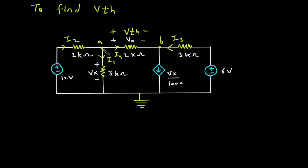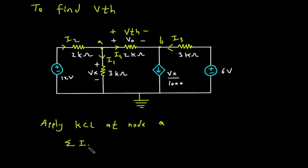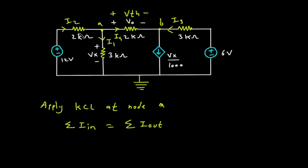Apply KCL at node A. According to KCL, that is Kirchhoff's current law, summation of I-in is equal to summation of I-out. Here the incoming current is I2, so I2 is equal to the outgoing currents I1 plus I4.